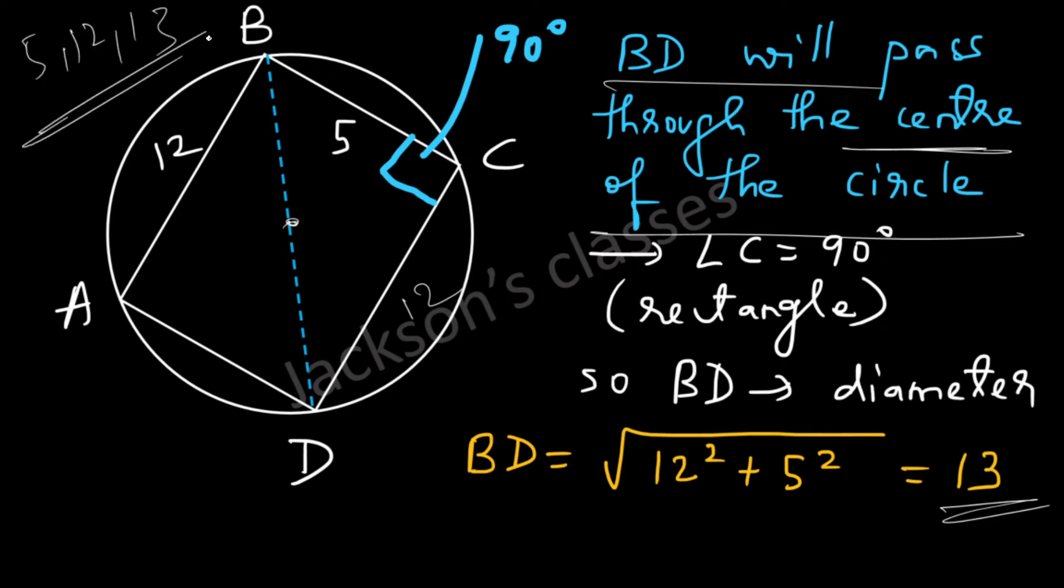So if you have 5 and 12 as two sides, even without calculating, if you know the Pythagorean triplet you can say that the third side of the right angle triangle will be equal to 13.